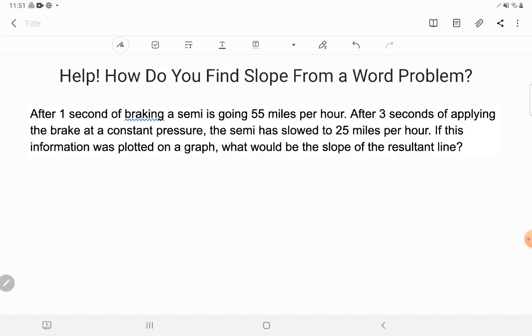It says, after one second of braking, a semi is going 55 miles per hour. After three seconds of applying the brake at a constant pressure, the semi has slowed to 25 miles per hour. If this information was plotted on a graph, what would be the slope of the resultant line?